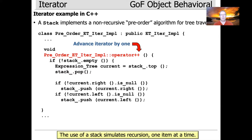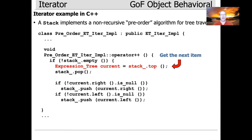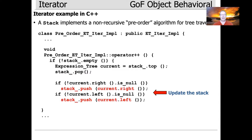Here's the pre-increment ++ operator, used to advance the expression tree iterator by one. Basically this simulates recursion one item at a time — we don't actually use recursion because we want to advance by one and return the object, then next time it's called advance by one again. With full-blown recursion it would just go through the whole tree and we couldn't stop after each element. If the stack is not empty, we take a snapshot of the current top of the stack, pop the current item, then push the right child if there is one, and push the left child if there is one. That adds the next elements onto the stack.